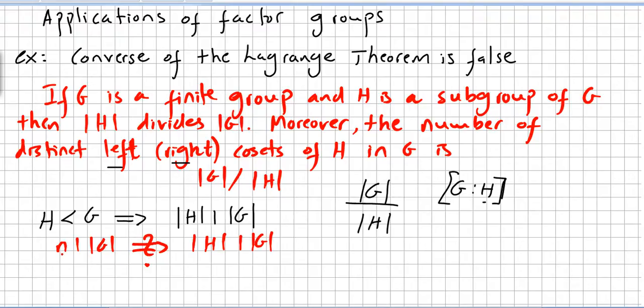So if N divides the order of the group, does this group have a subgroup of that order? Yes or not? We are going to check that. So this would be the converse here. And we are going to check that this is not true. So this is the example. Converse of Lagrange theorem is false.